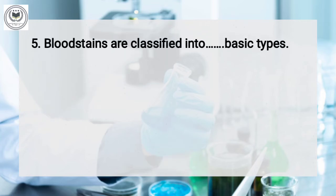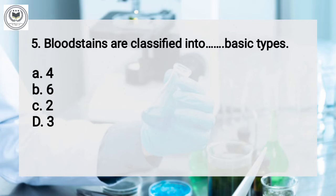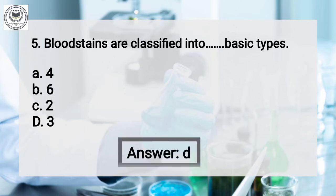Question number 5: blood stains are classified into how many basic types? Option A: 4, option B: 6, option C: 2, option D: 3. And the answer is 3.